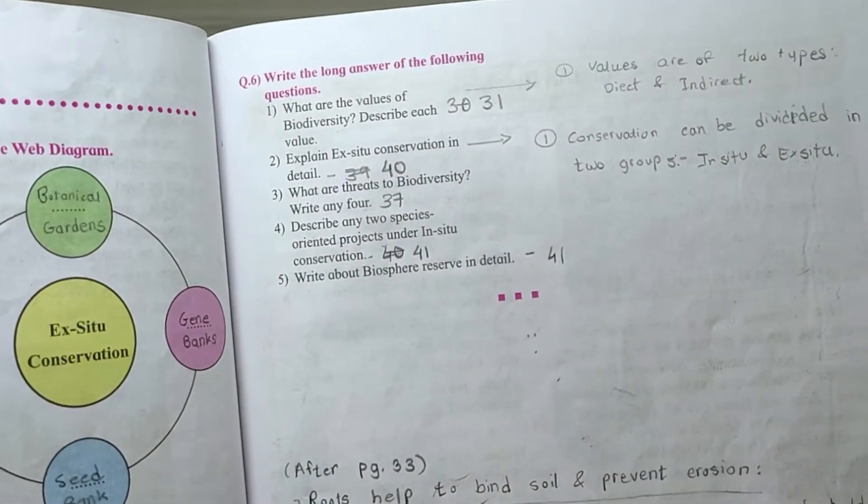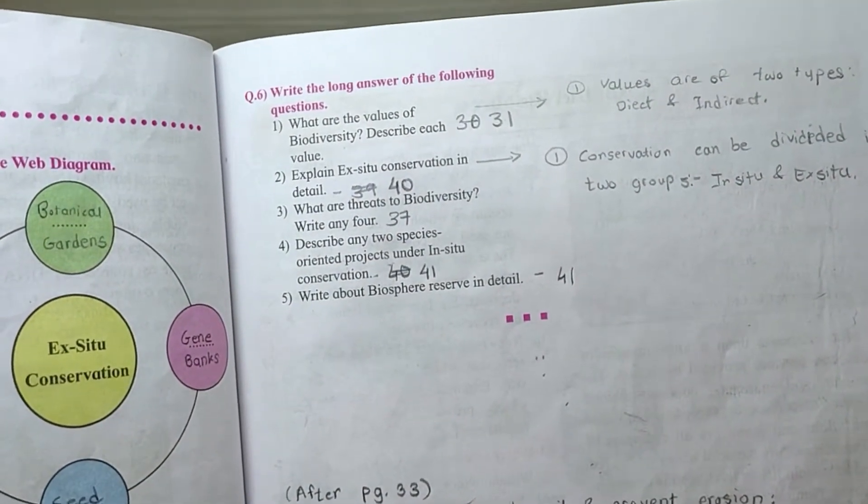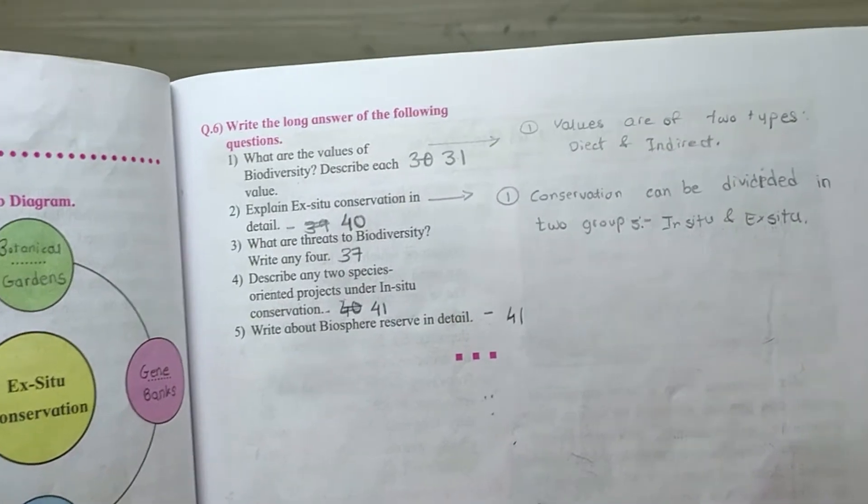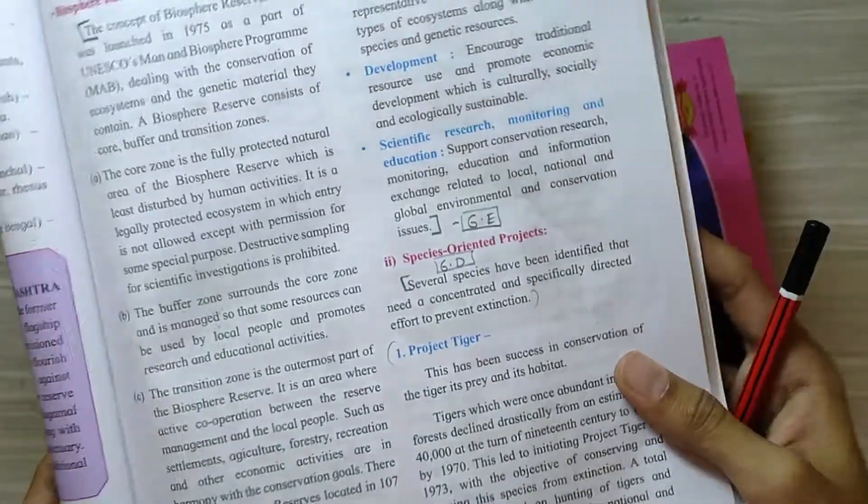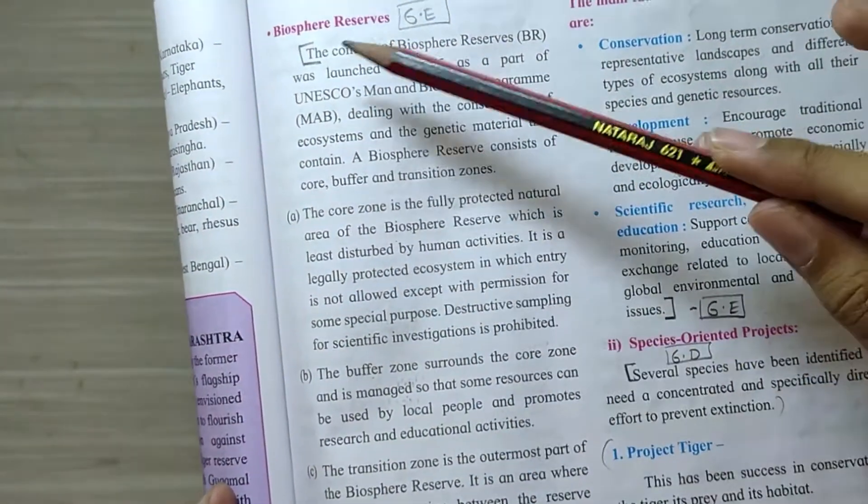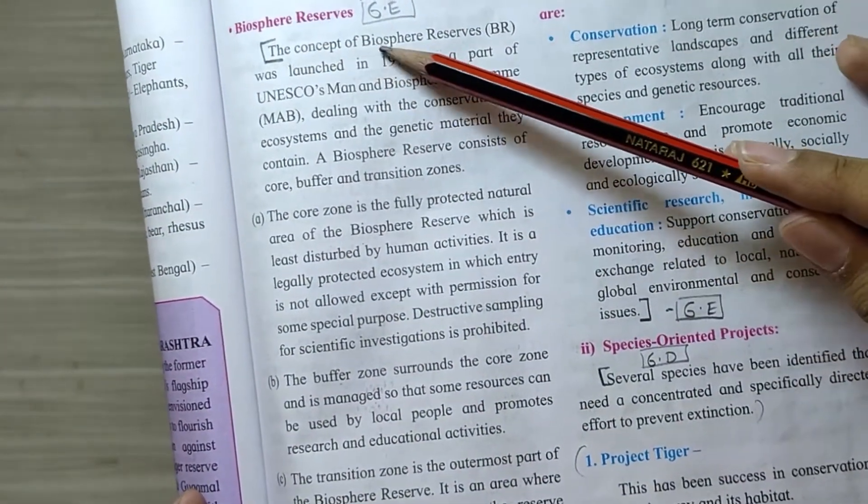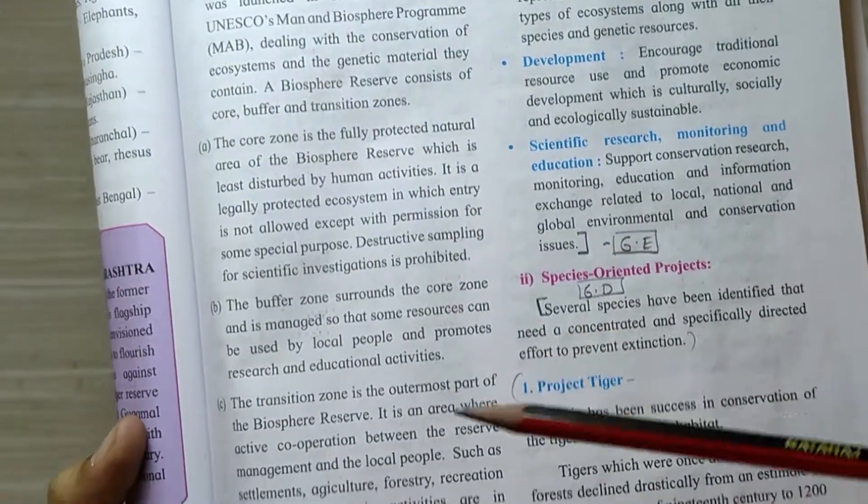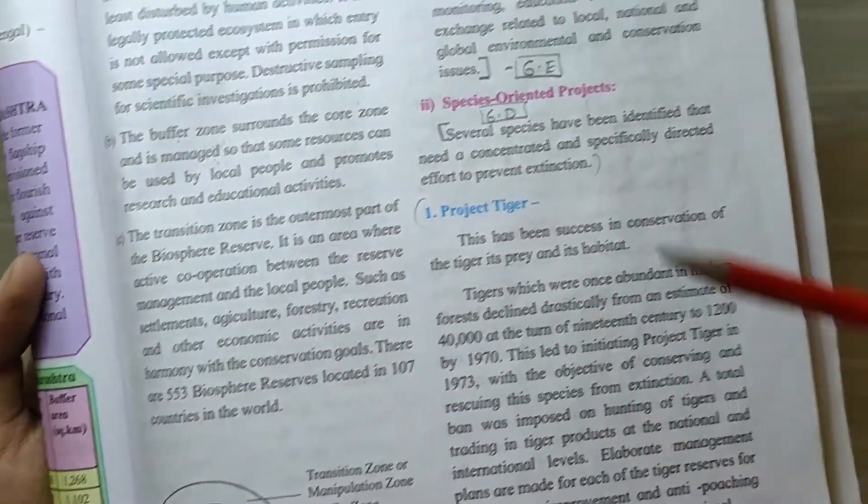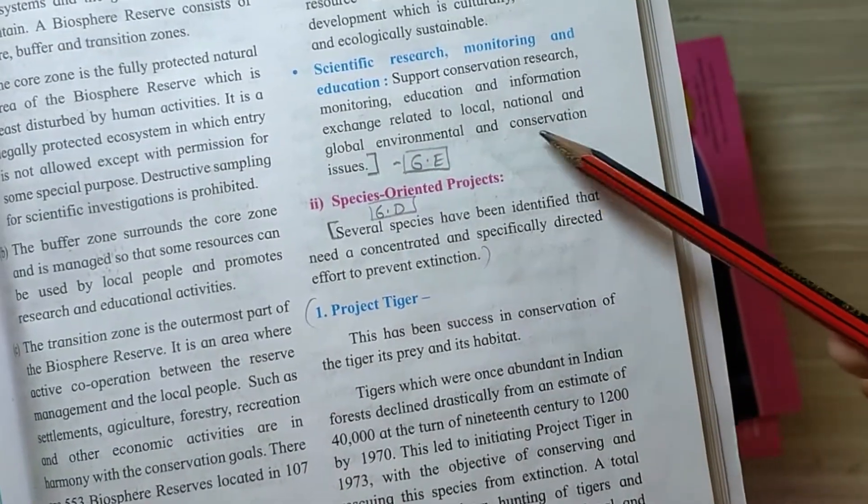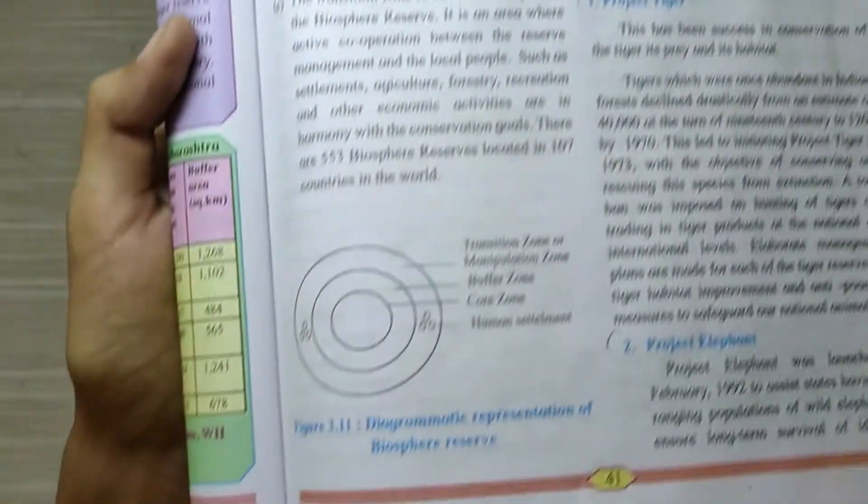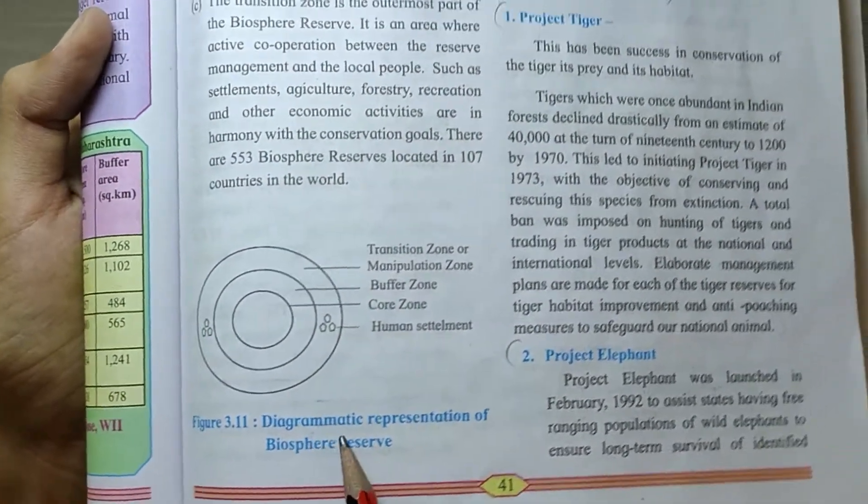Last question, write about biosphere reserve in detail. It is on page number 41. You can see the biosphere reserves paragraph, you have to write from the concept of biosphere till and conservation issues. You can also draw this diagram.